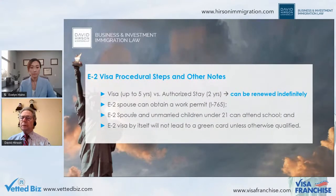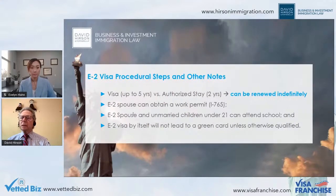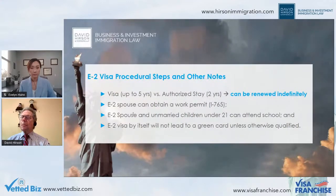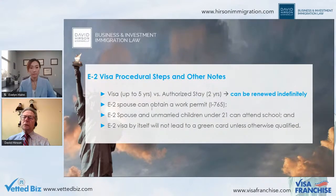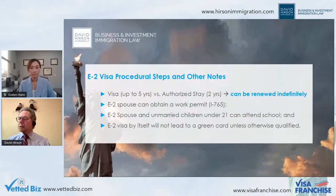Visa stamps placed in the passport by the consulate can be up to five years at the consulate's discretion. This is different from your stay: when you arrive in the US in E2 status, you are given a two-year stay. Each time you arrive with a valid visa stamp, you will get two years. If the visa stamp expires, you can either extend your E2 in the US or go to the US consulate and file a new application. The E2 visa cannot lead directly to a green card, but you could qualify under other categories such as intra-company transfer executive or manager.